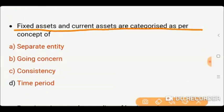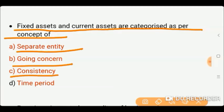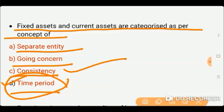Next question: Fixed assets and current assets are categorized as per which concept? Options: entity, going concern, consistency, or time period. Fixed assets and current assets are classified according to the time period concept. Current assets can be liquidated within one year, whereas fixed assets can be used for a long time. So option D — time period — is correct. Going concern means the business will continue, and separate entity means the business and owner are separate entities.